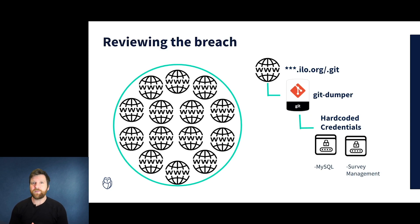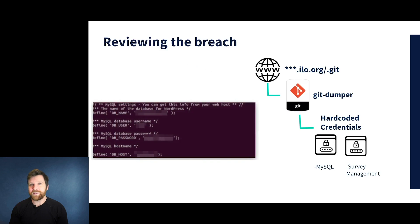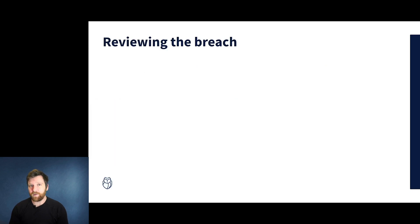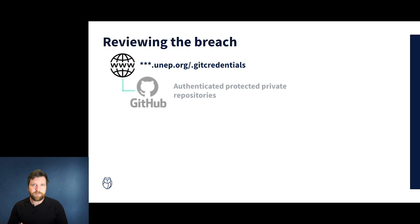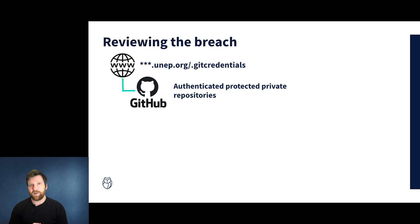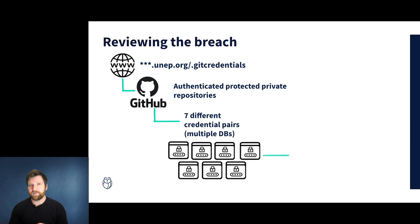Following on from this, they were able to enumerate all the other endpoints that were identified, before ultimately being able to find a GitHub access token in one of the subdomains. Anyone that's worked in large organizations will know that Git repositories, particularly private ones, contain a huge amount of sensitive information — they are very high value targets. The attackers found seven sets of credentials, gaining them access to multiple different databases, and they also found backups of these databases within the repository itself.